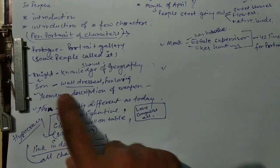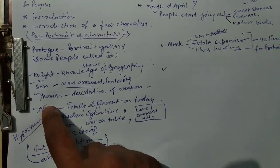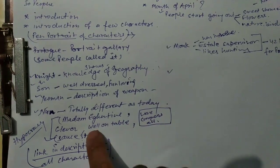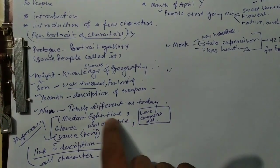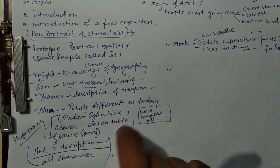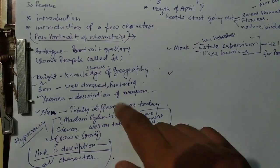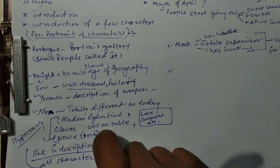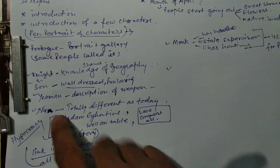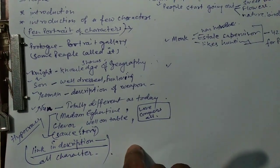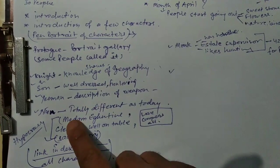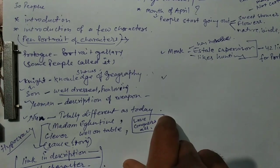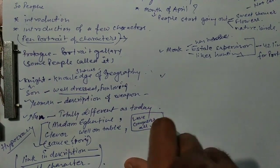The Nun is totally different from how we see nuns today. If we see a nun today, we find a simple and humble person, but she is clever. She was quite good at the table, and there is a source story she tells. We can say this was the symbol of hypocrisy. Her name was Madam Eglantine and she wore a phrase that meant 'Love Conquers All.'